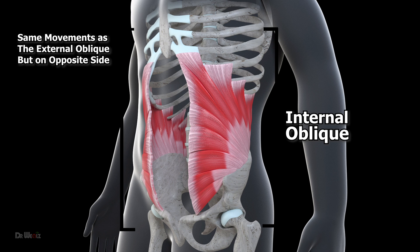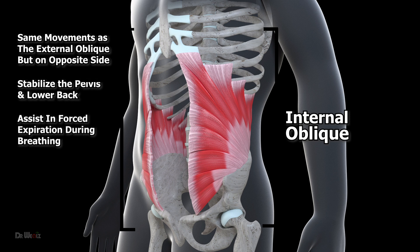The internal oblique also helps to stabilize the pelvis and lower back, as well as assisting in forced expiration during breathing. It contributes to rotational movements of the trunk and is particularly important during sports or activities that involve twisting.